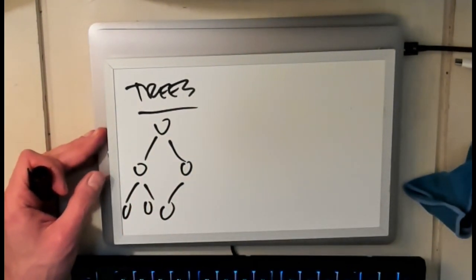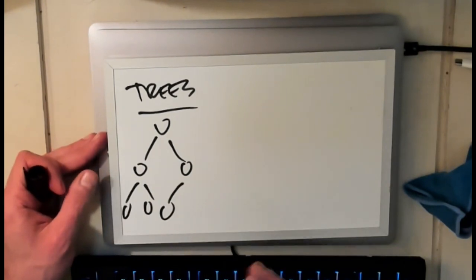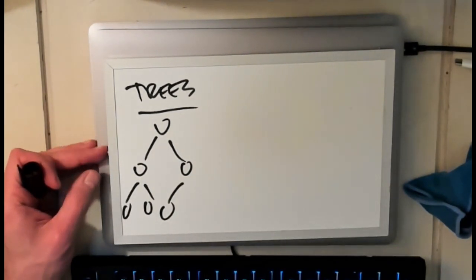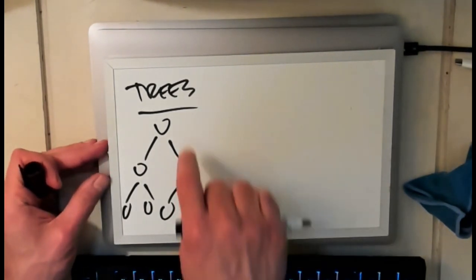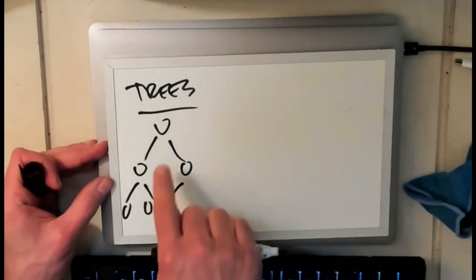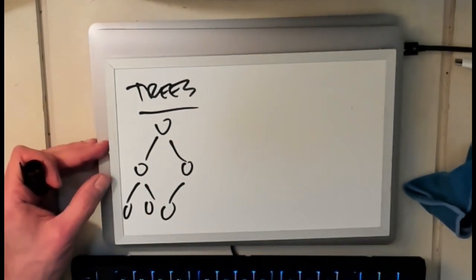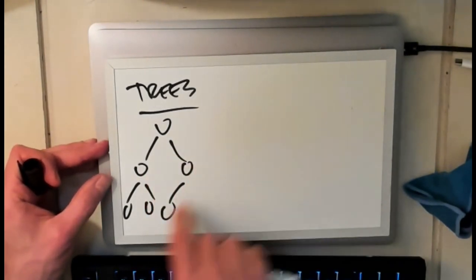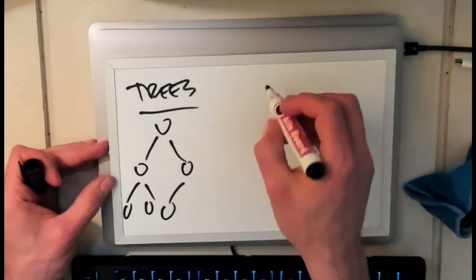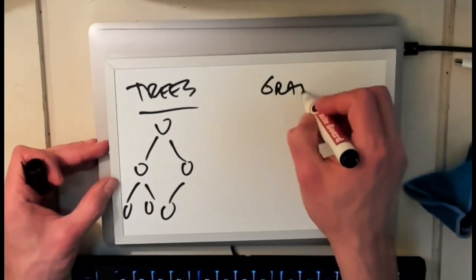What recursion does is it allows me to traverse this in a very nice way without having to keep track of really complicated state. There are ways to use iteration to go through trees and graphs—I don't want to make you think it's impossible—but it's really the branching structure of these data structures that makes them less amenable to iteration.